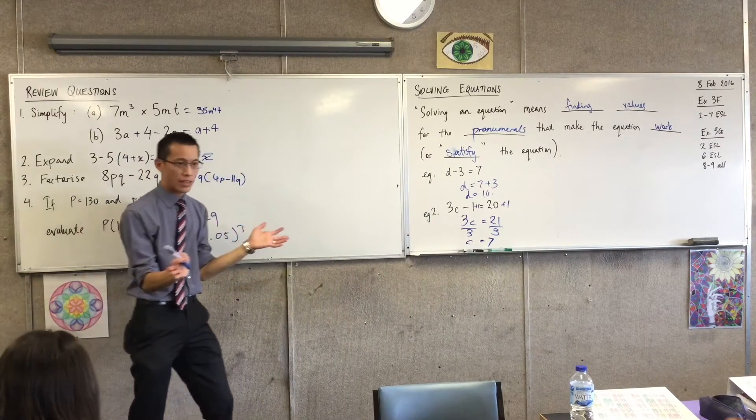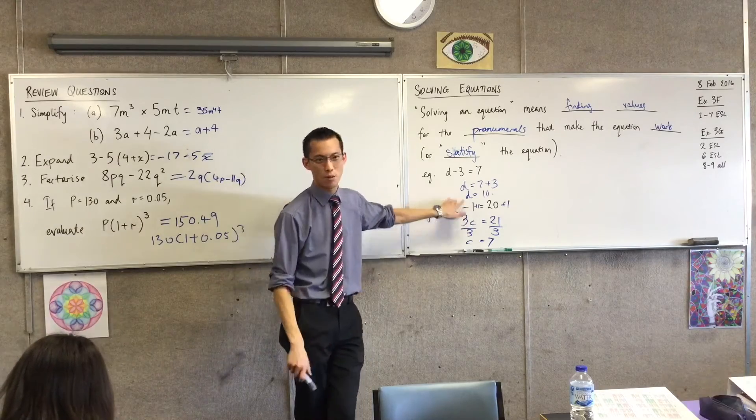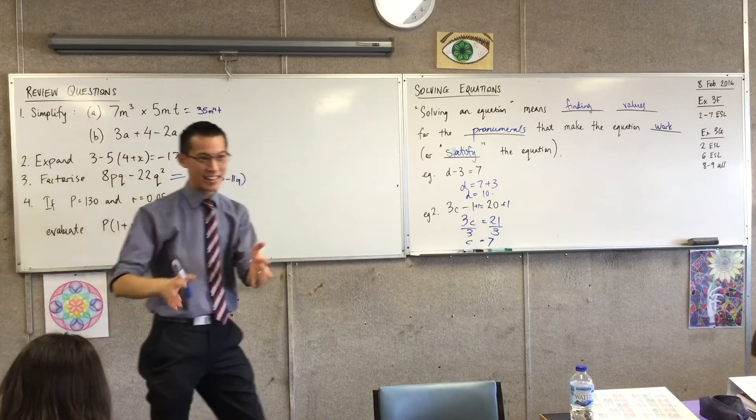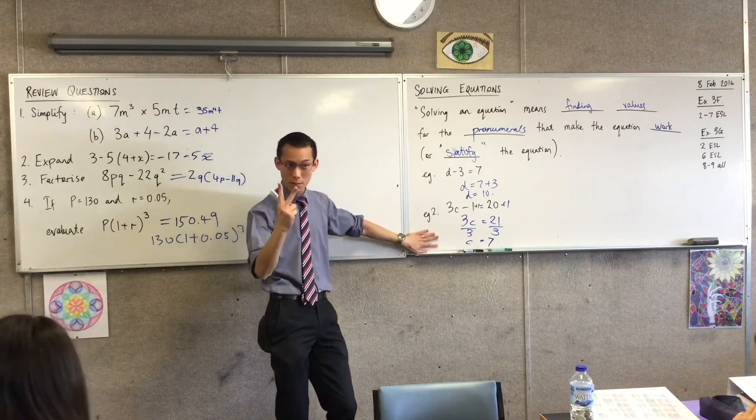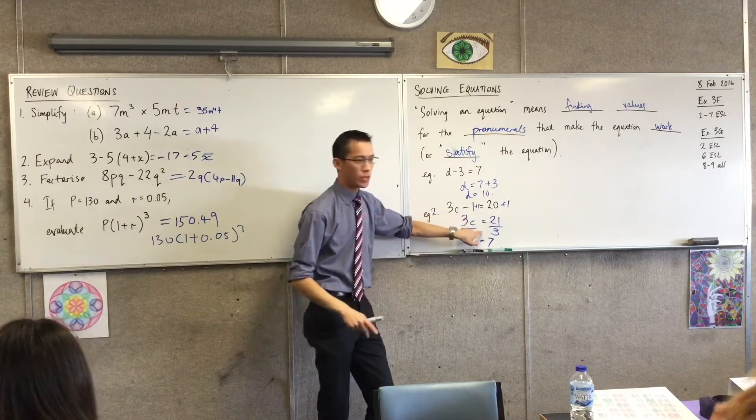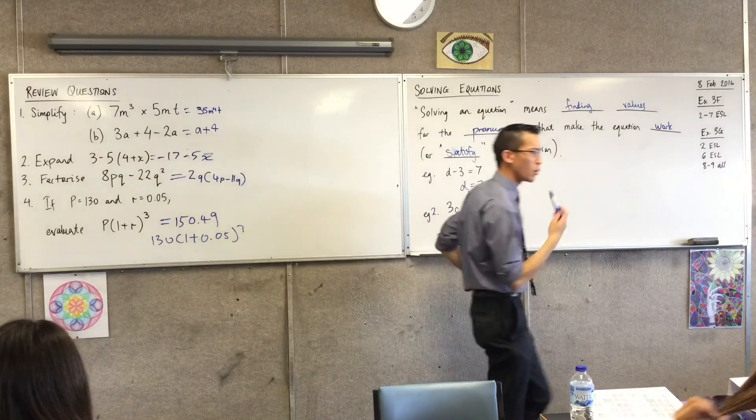You see, all we're doing here, right, is we're trying to corner this pronumeral, get him on his own in a dark alley, and then beat him to a pulp, right? Now, we did two steps, yeah? Two steps. We added one. We divided by three. Does it matter which one we do first?